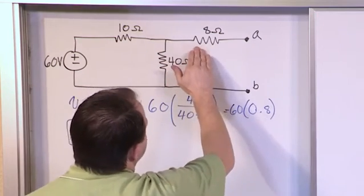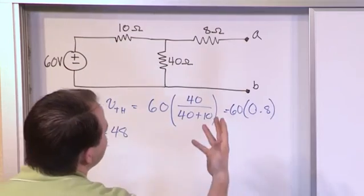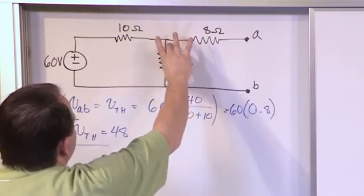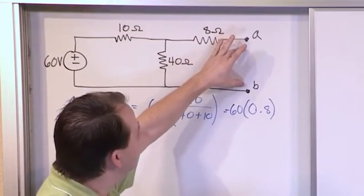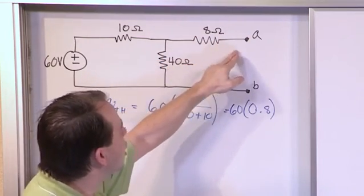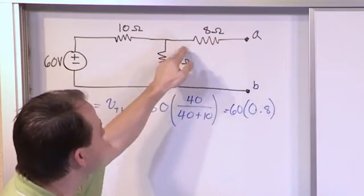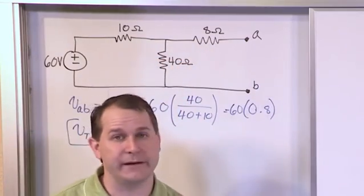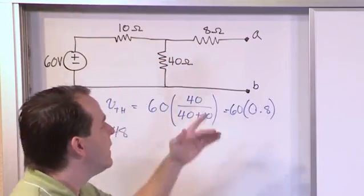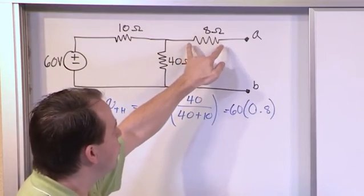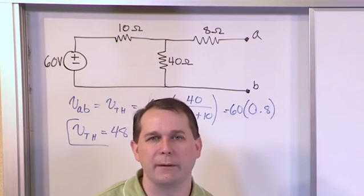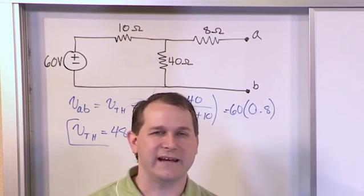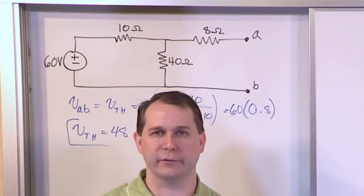Now, this 8 ohm resistor, it is in the circuit, but it doesn't really matter when measuring the voltage across this 40 ohm resistor. Why do you think that is? Because this is open circuited here. There is absolutely no current flowing through this 8 ohm resistor or across A and B either, because it's open air. Since there's no current flowing through this resistor, then there can be no voltage drop across that resistor. There just can't. If there's no current going through it...